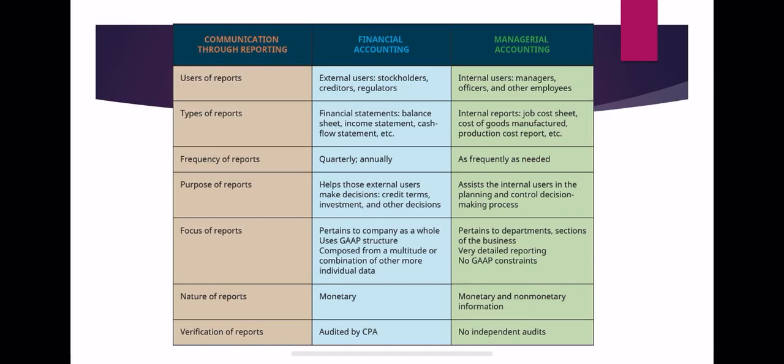Frequency of reports: Financial accounting reports are produced quarterly or annually — for example, from April to March over six months. For management accounting, you can see reports as frequently as needed, such as daily sales figures.